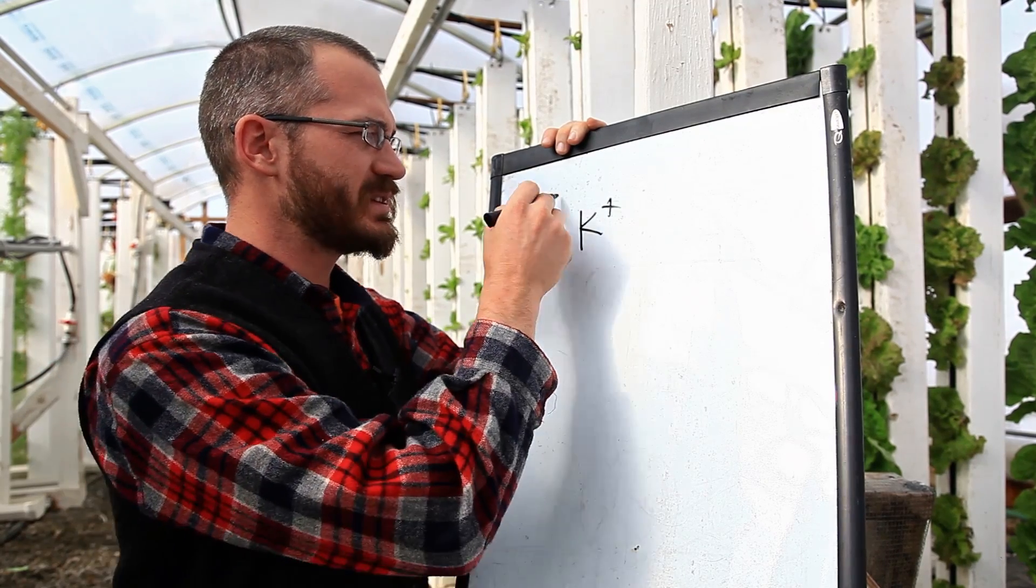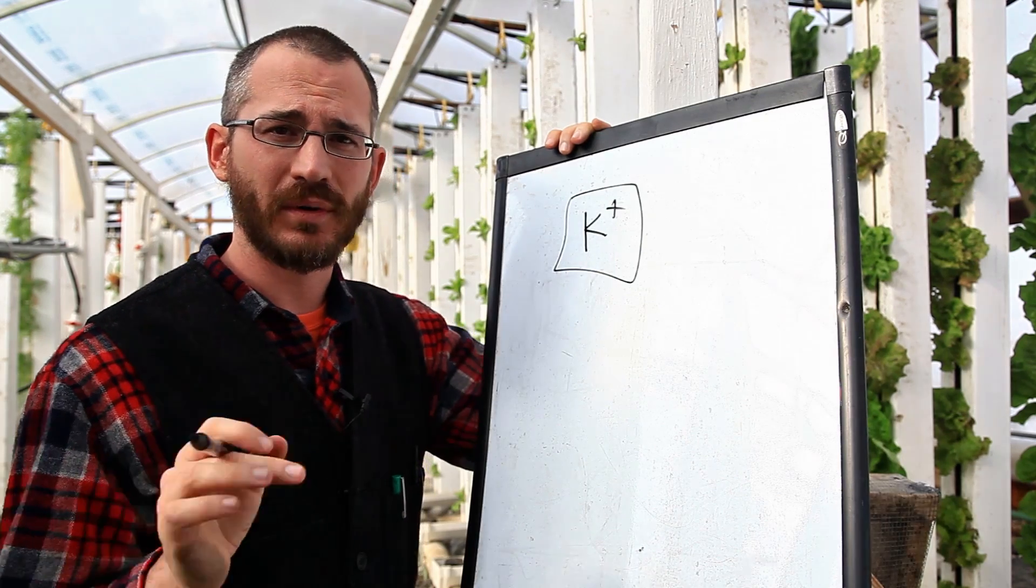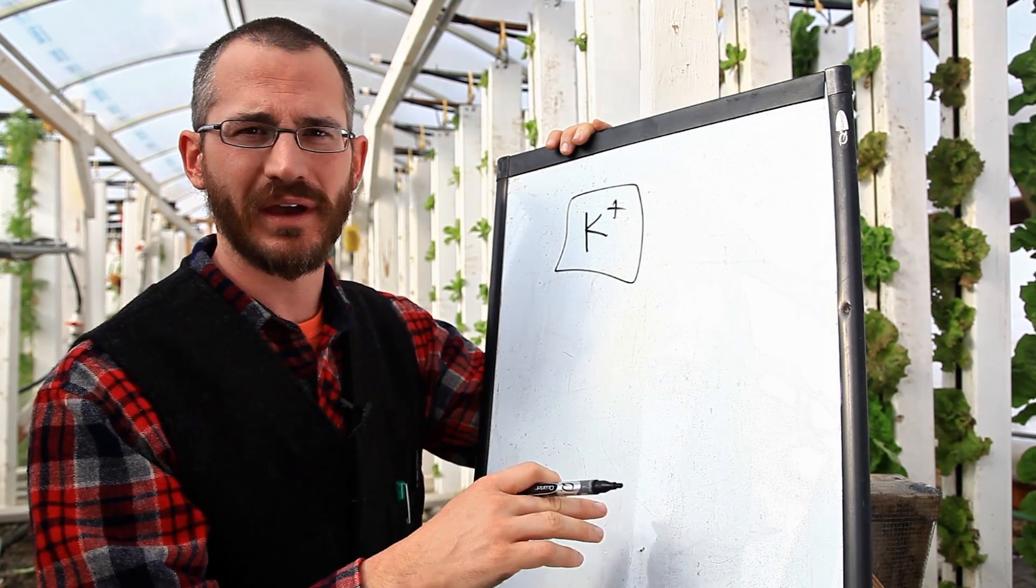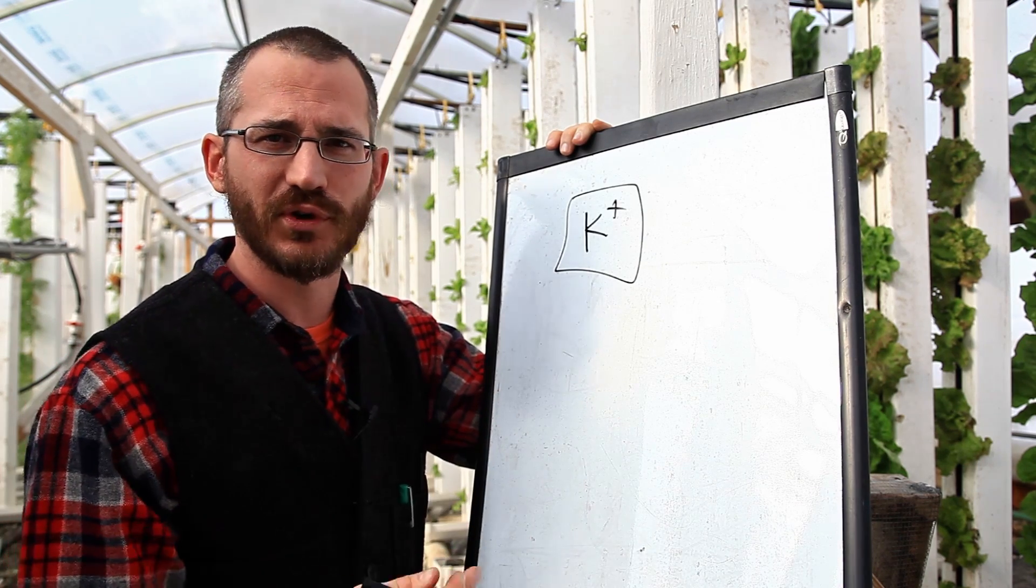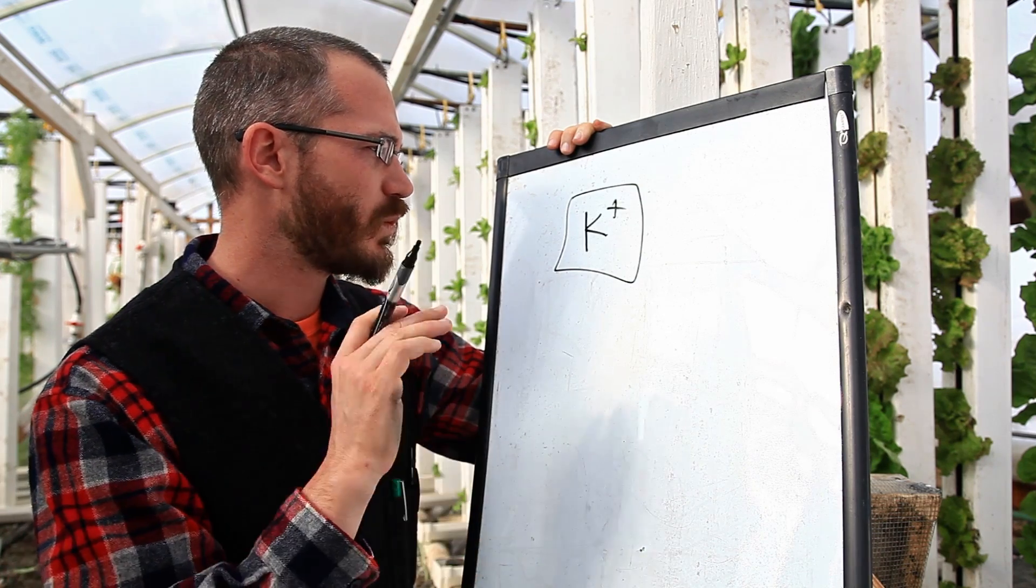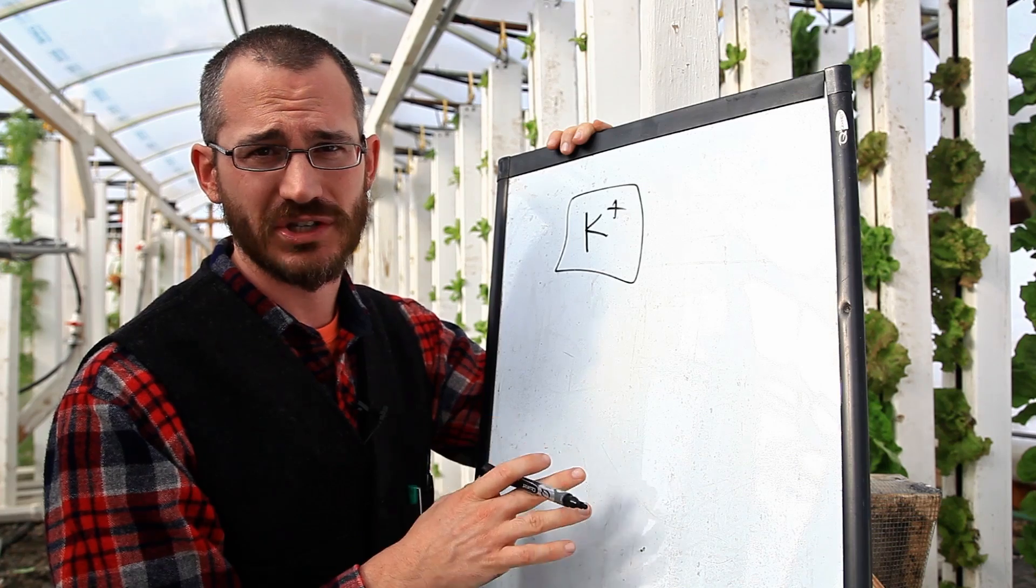So potassium, once it's taken up by the plant, is mobile. That means the plant can move it around, and if it's sent to some tissues to do its job there, the plant can easily reallocate it and take it to new tissues for new growth and reproduction, which basically means that when we see deficiency symptoms, they're usually in the older plant tissues.